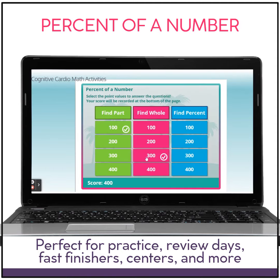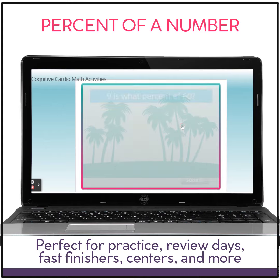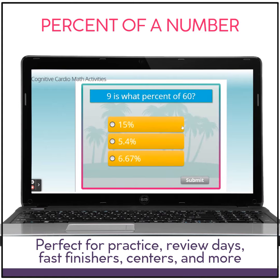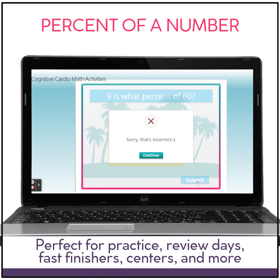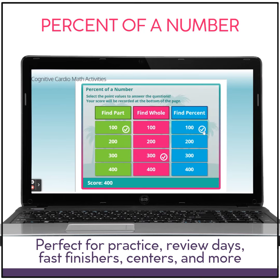Continuing, we now have a total of 400 points. Then we try a 100-point question: nine is what percent of 60? The answer entered is 6.67, but that is incorrect. We can see the question has been used, but no extra points were earned for an incorrect answer.